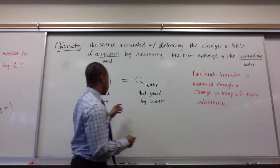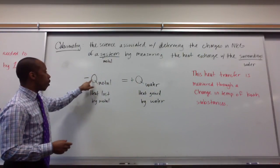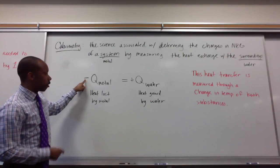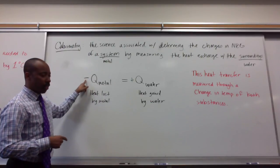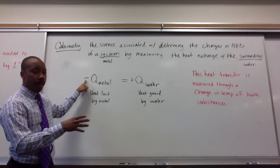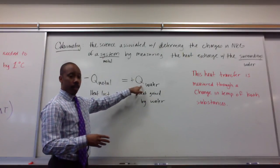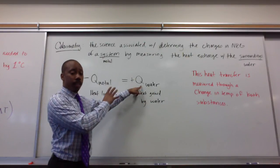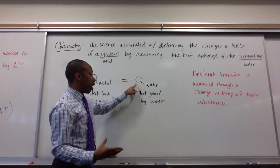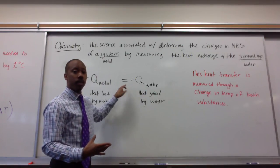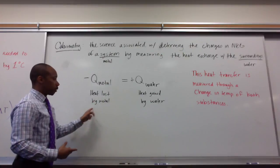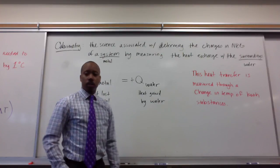That's the relationship that we see here. The heat of the metal is negative because heat was released, and it was released to the water. The heat lost by the metal is the heat gained by the water. That's why we have a positive value here. We can set them equal to each other: heat lost by the metal, heat gained by the water.